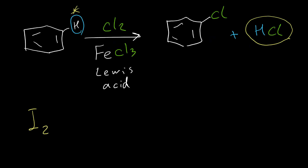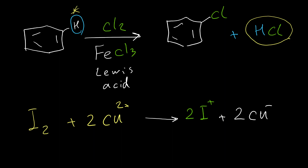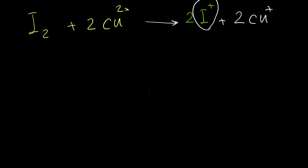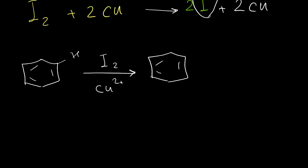For iodine, the reaction is different. We need to use Cu2+ as a catalyst; it is a redox reaction. Iodine is oxidized and produces two I+, while Cu2+ is reduced to two Cu+. This I+ then reacts with the benzene ring. For example, the product is iodobenzene.